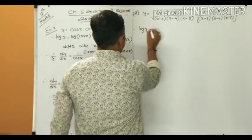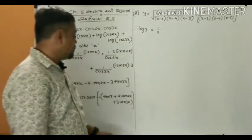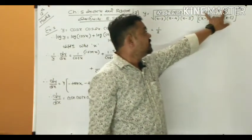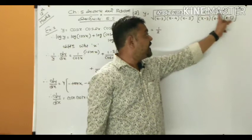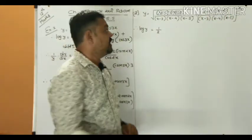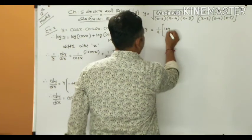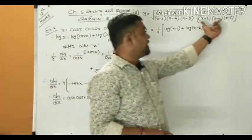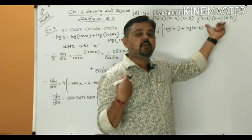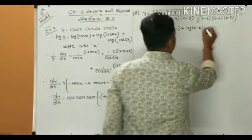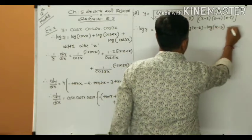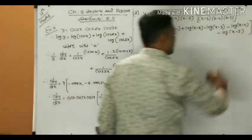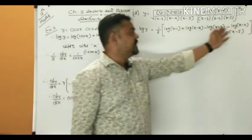Taking log on both sides: log y = (1/2)[log(x−1) + log(x−2) − log(x−3) − log(x−4) − log(x−5)]. The power 1/2 comes in front as a multiplier. The two numerator terms become addition, and the division means the three denominator terms become subtraction, so all three are negative.